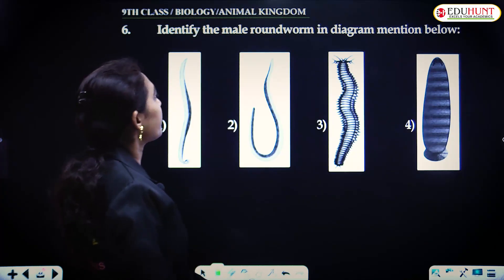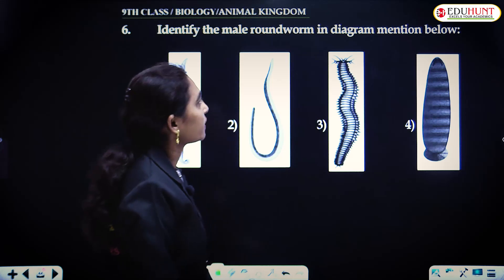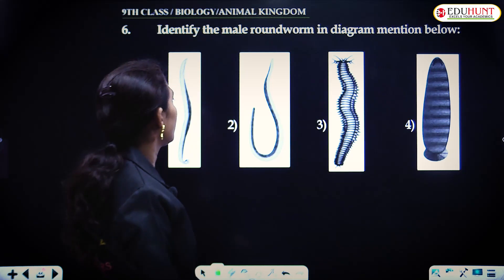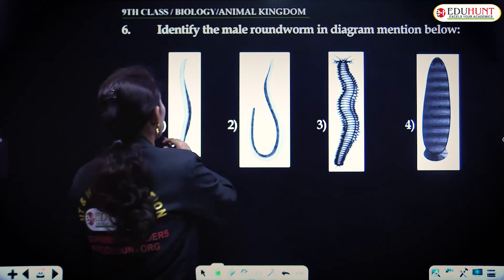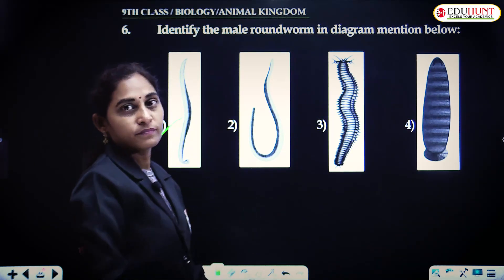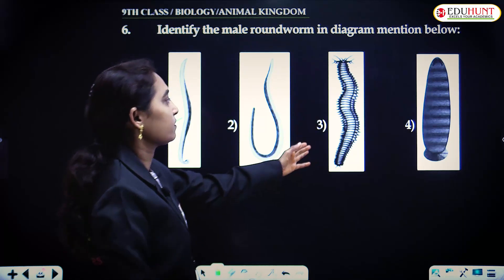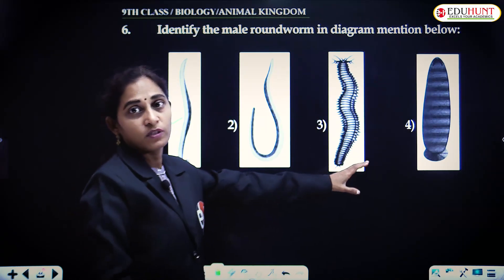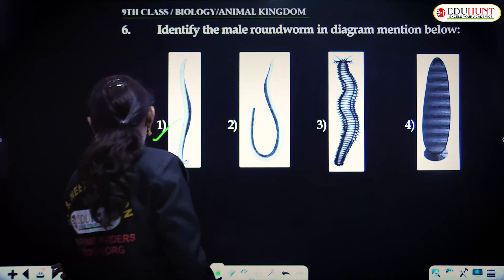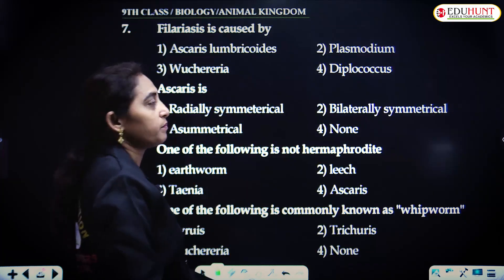Identify the male roundworm in the diagram mentioned below. The first one is the male roundworm; the second is the female. The others do not belong to the Aschelminthes phylum — they do not belong to them.